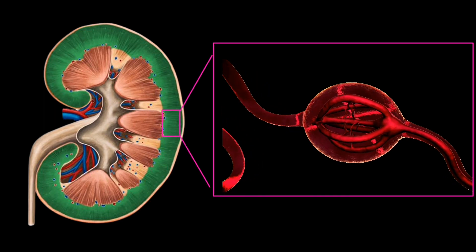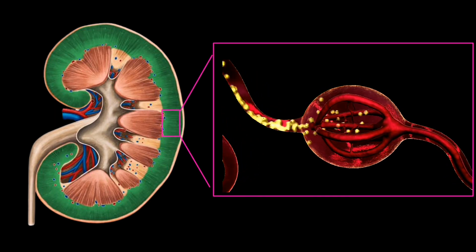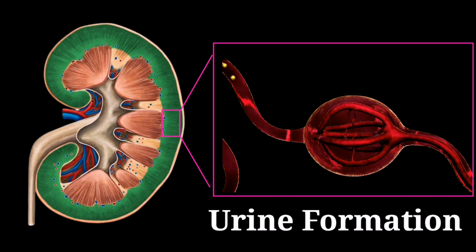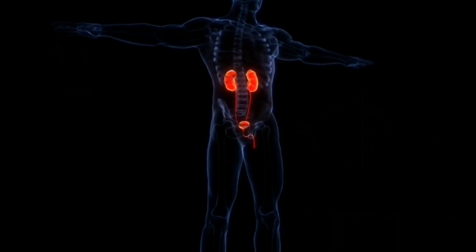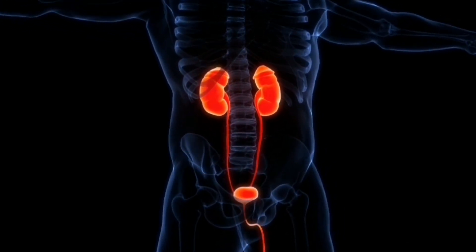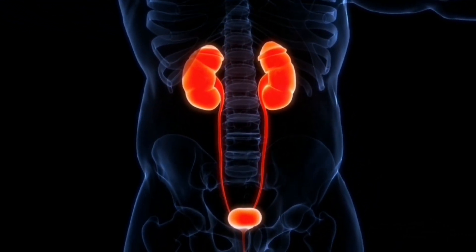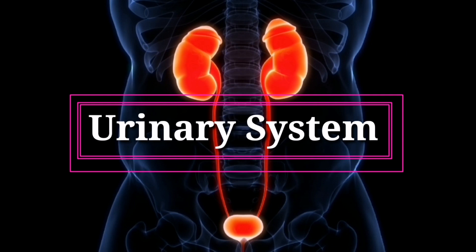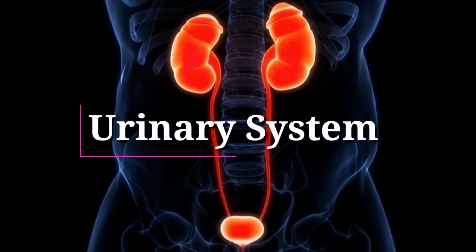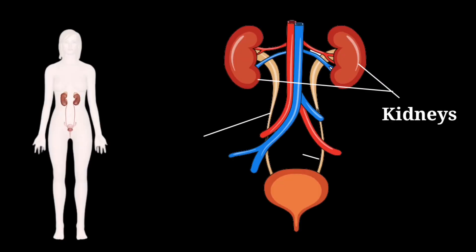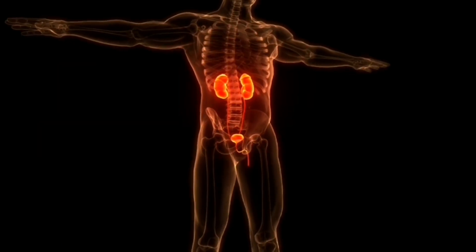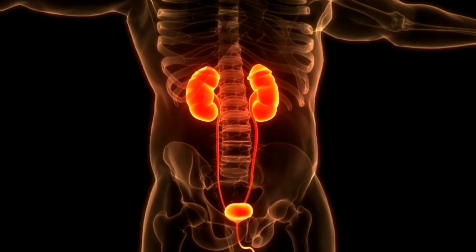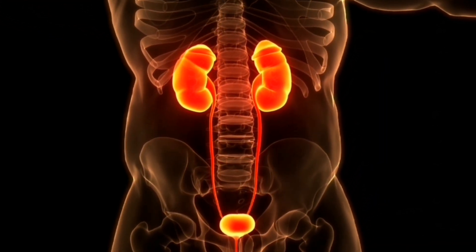Welcome back to our channel. Today we are going to explore the fascinating process of urine formation. Before we understand how urine is formed, let's take a quick look at the urinary system. The urinary system consists of two kidneys, two ureters, a bladder, and a urethra. The kidneys, located on either side of the lower back, play a vital role in filtering waste materials from our blood.